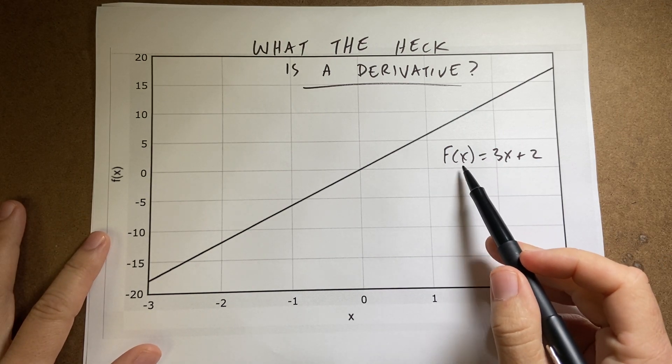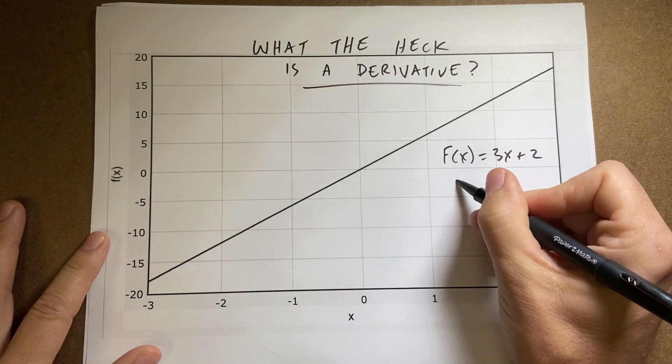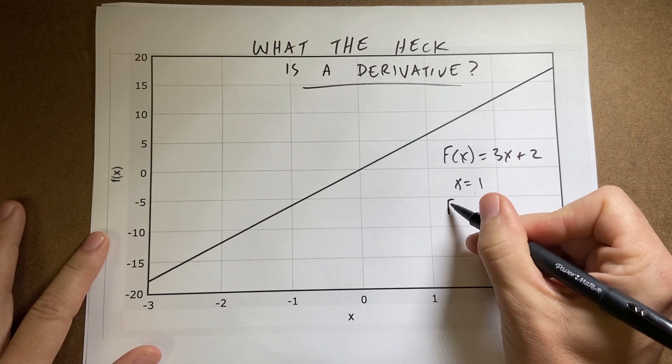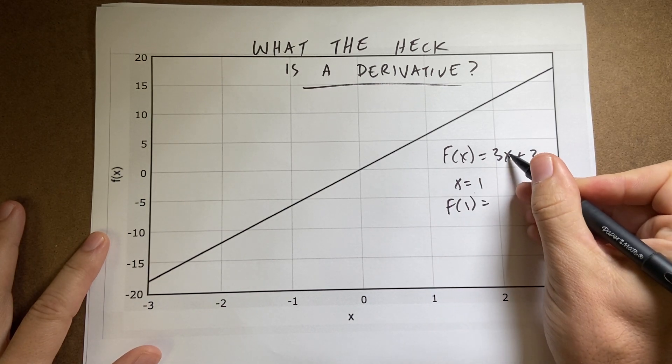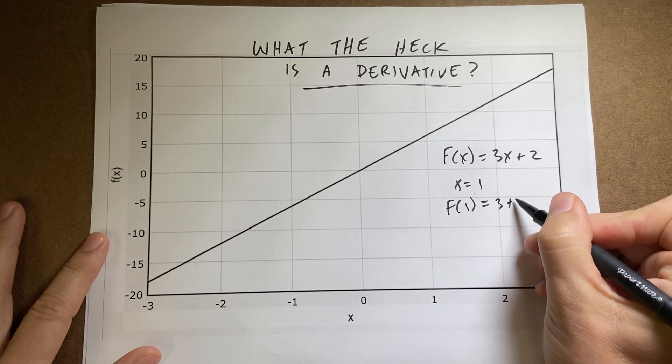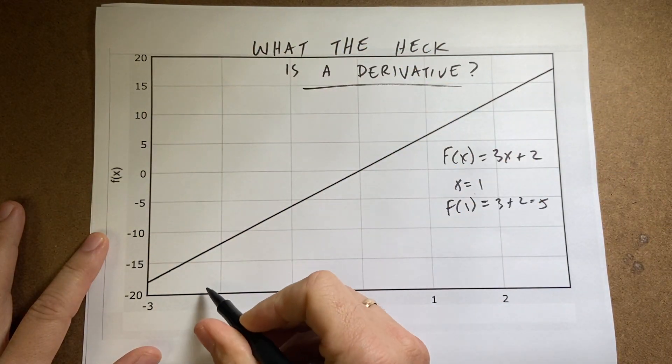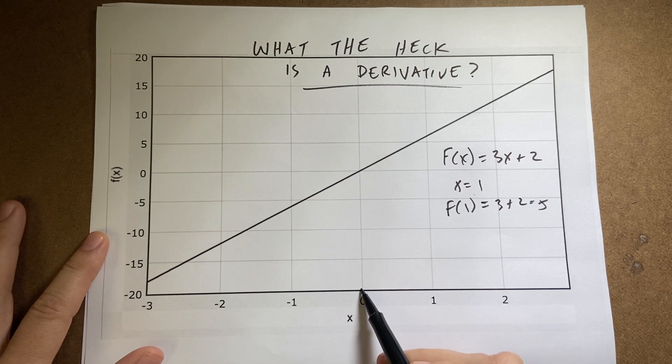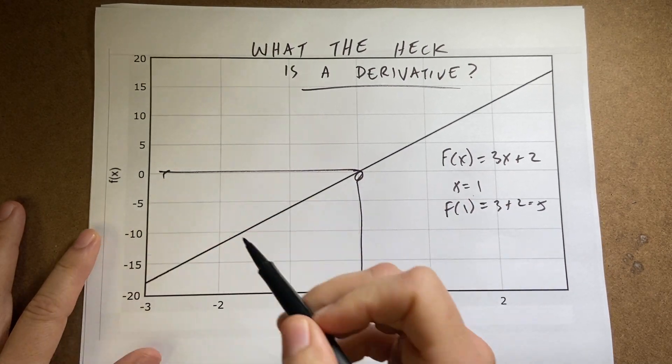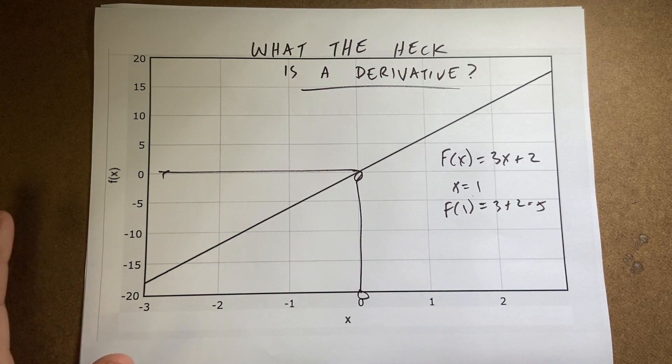So this function says that if I put in an x value if x equals 1 then f of 1 would be I put in 1 right there and I get 3 plus 2 equals 5. So it gives me the value on this side for the different x's here. So I put in x's and it gives me a value right there. Okay that's the function.